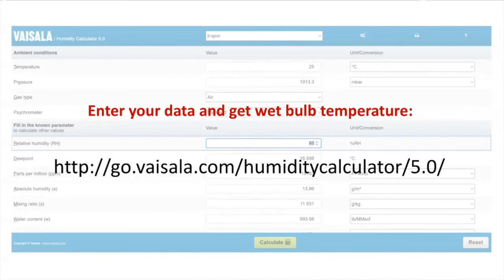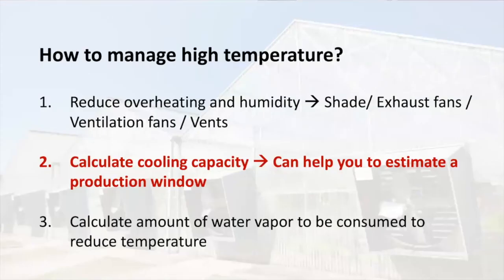Temperature is starting to rise in many places and we need to be prepared. If you are putting together a project or trying to improve the current one, it will always be important to take action and learn how to manage high temperature. Step one will be to avoid overheating by using shade cloths, fans, exhaust fans, and vents. Step two will be what we just learned — calculate the cooling capacity of the system. Remember, evaporation can help you to reduce temperature in comparison to the outside, meaning your production window can increase depending on the climate where you are located.